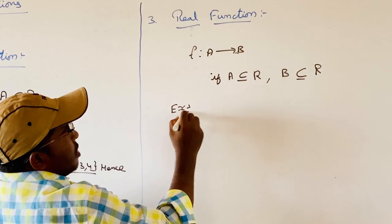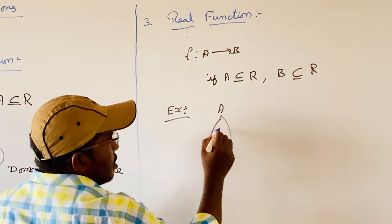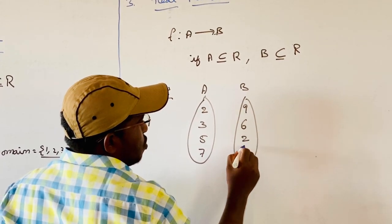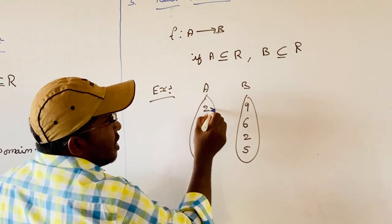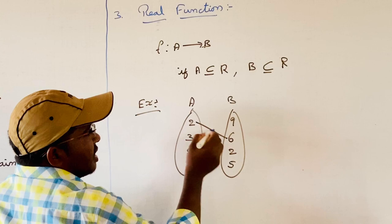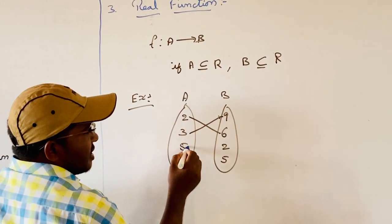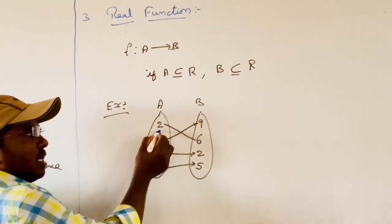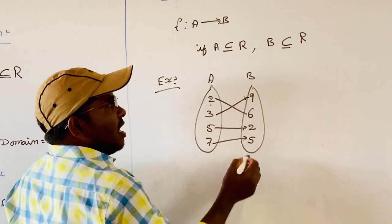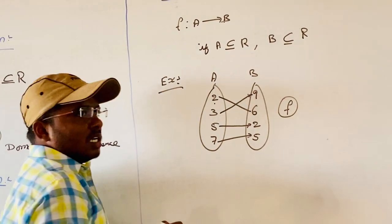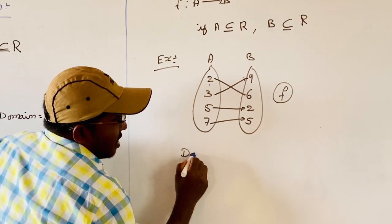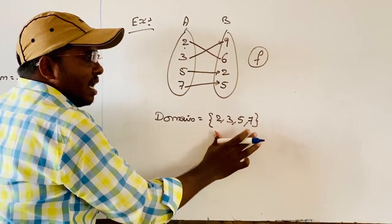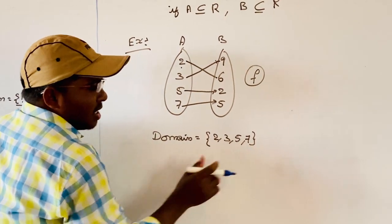For example, set A has elements 2, 3, 5, 7 and set B has elements 9, 6, 2, 5. Every element of set A is related to exactly one element of set B, so it is a function. The domain of the function is {2, 3, 5, 7}, which is a subset of real numbers, and the range is also a subset of real numbers.